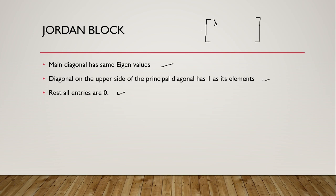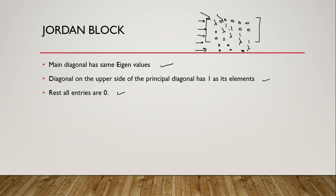So what this means is: all values in the diagonal are eigenvalues. If you see the rows — first, second, third, fourth, and fifth — all elements on the upper side of the principal diagonal are one, and rest all elements are zero.